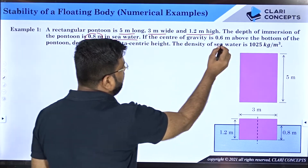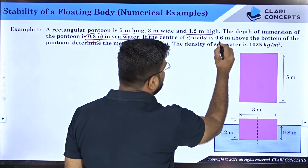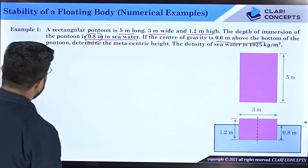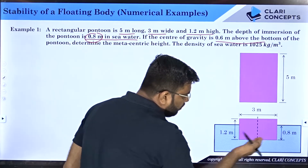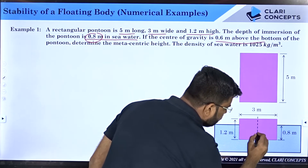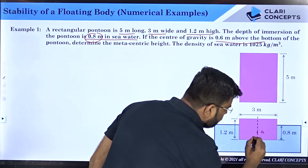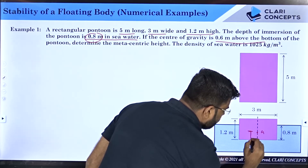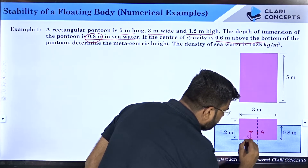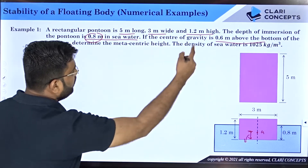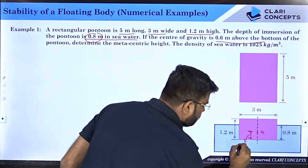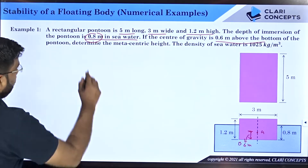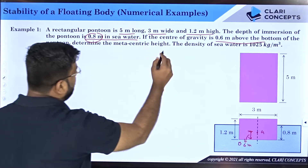If the center of gravity is 0.6 meters above the bottom of the pontoon, that means this is the bottom and the CG is located above it. So the distance between the bottom line and G is 0.6 meters.